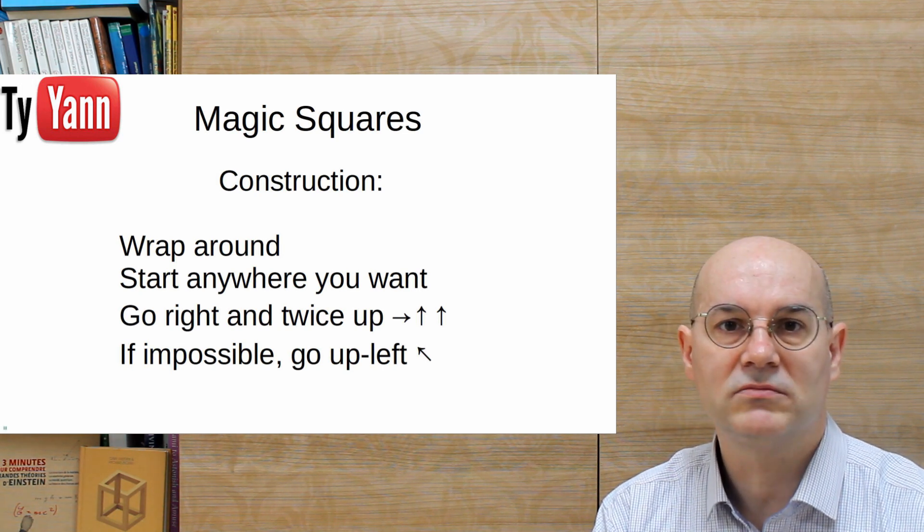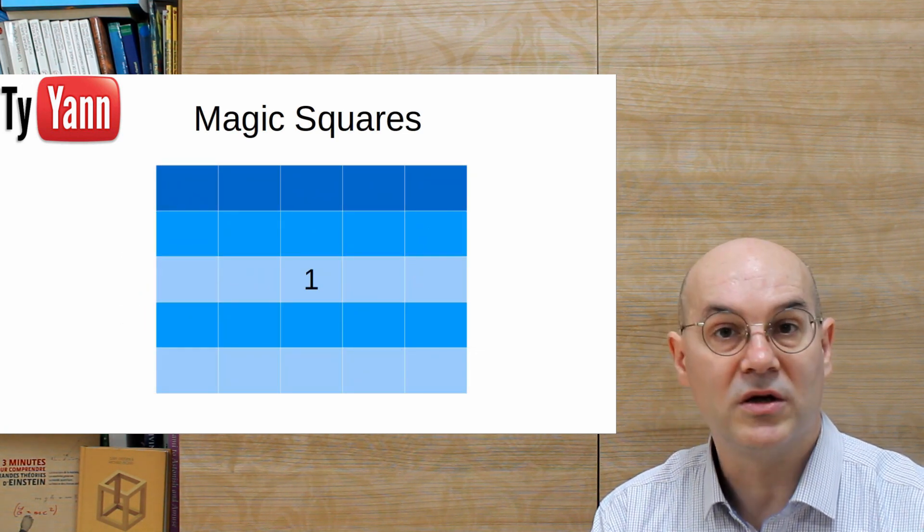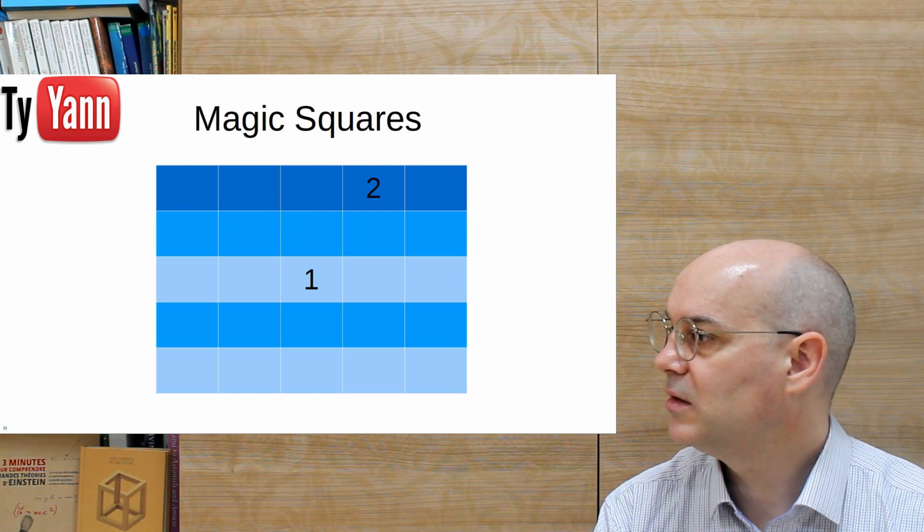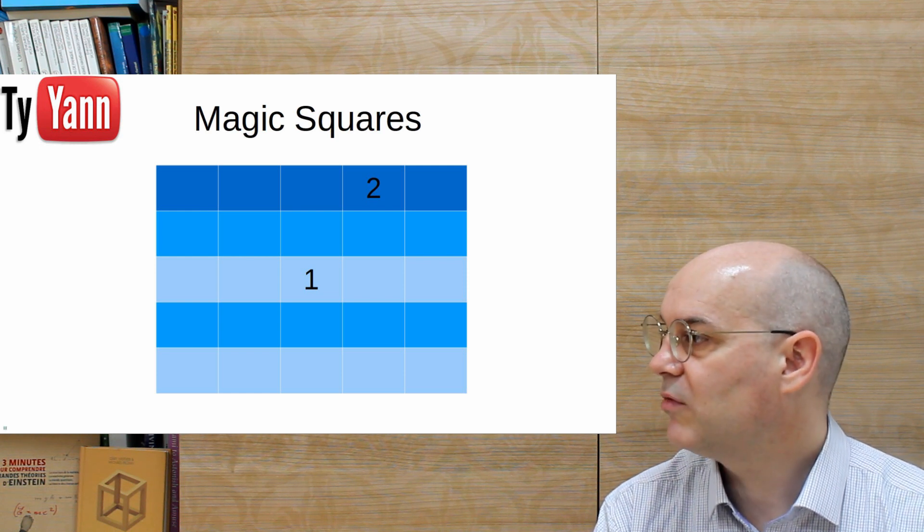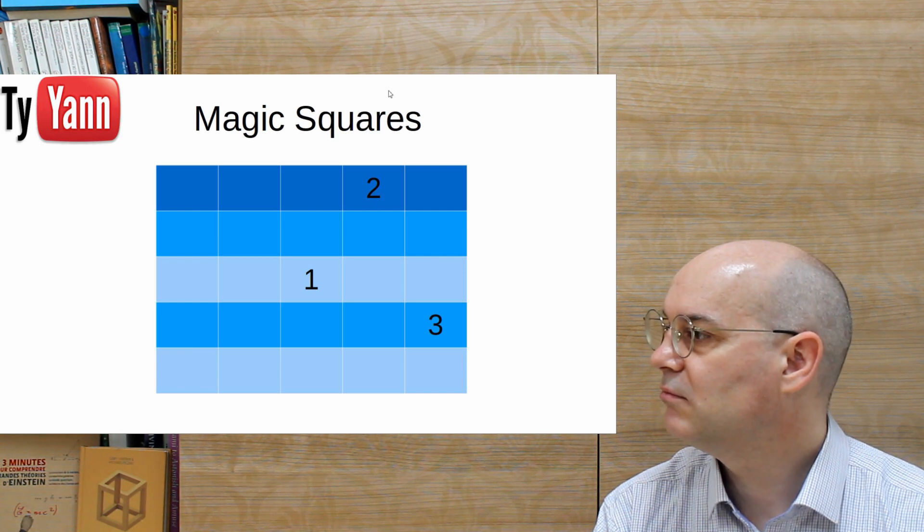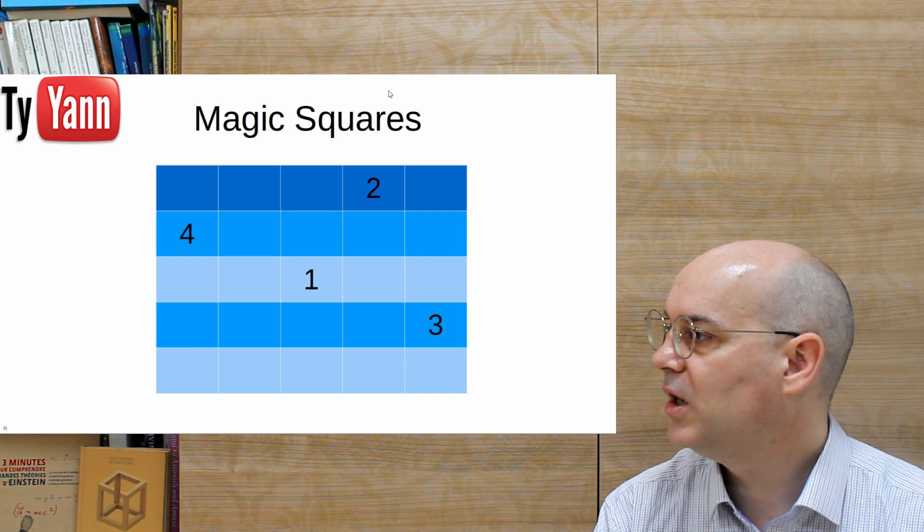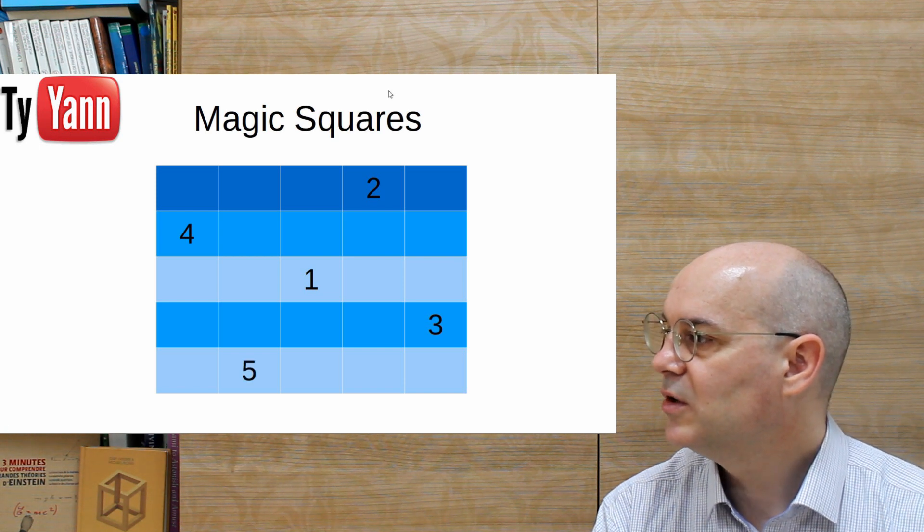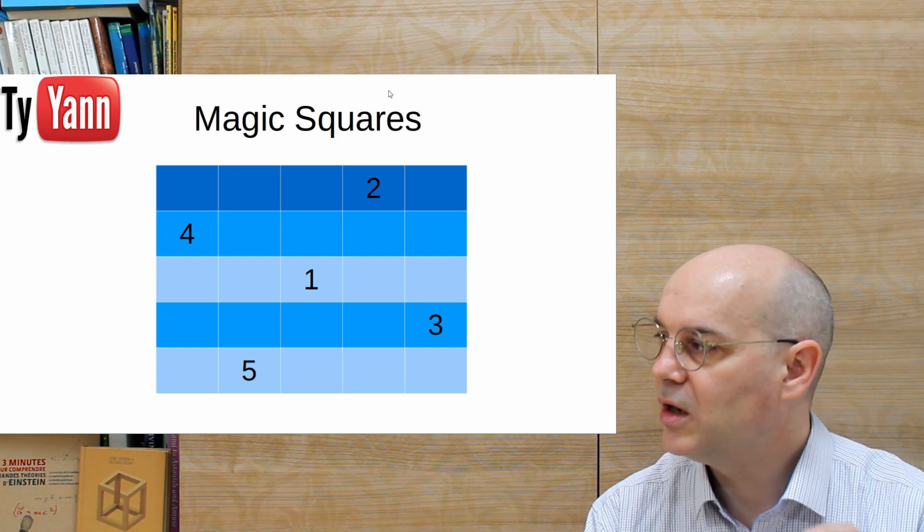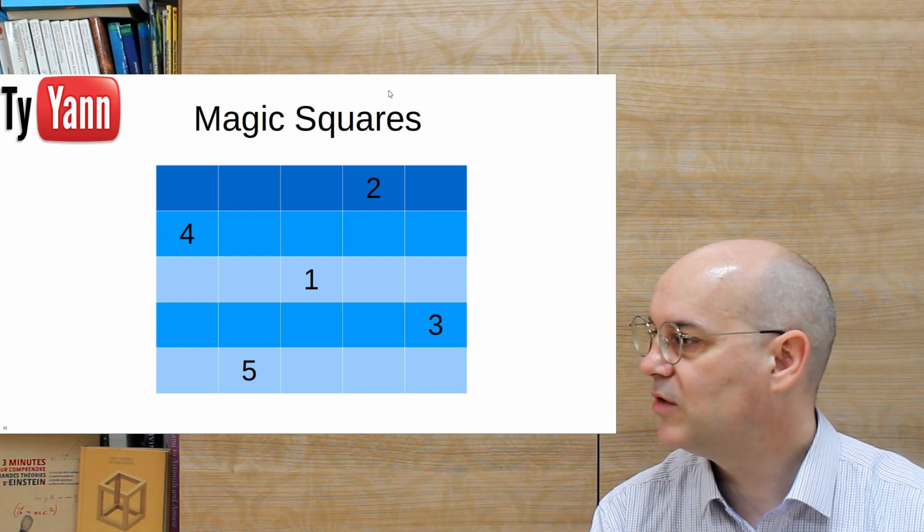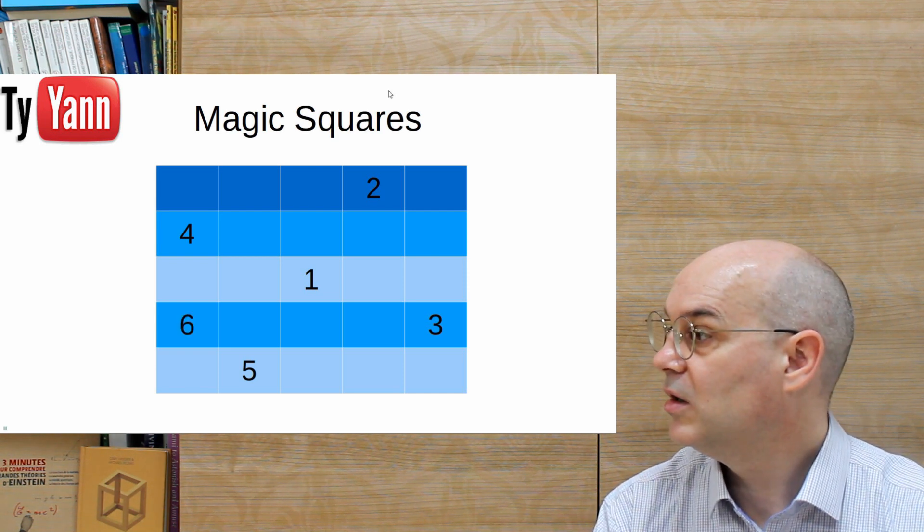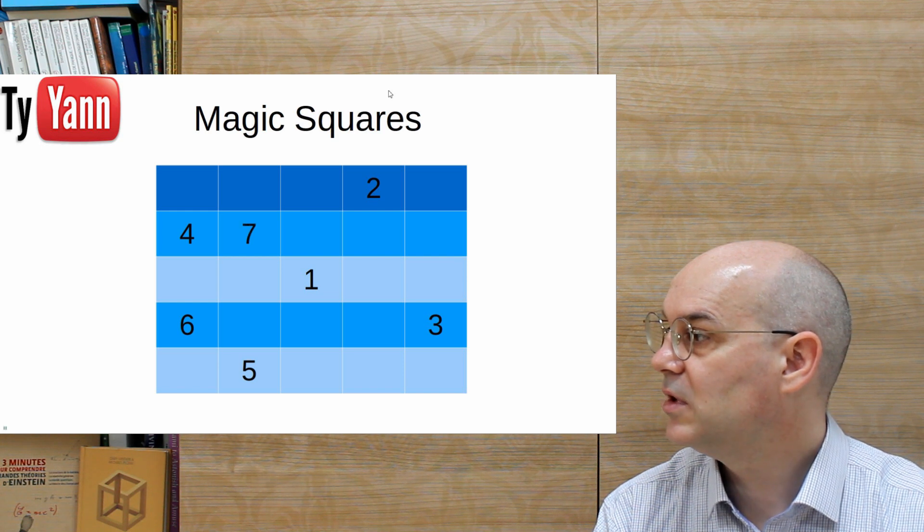Let's do this. So we start anywhere we want. For instance, here we start in the center. Put out 2, like here. 1 on the right, 2 up. The 3 wrapping around, no problem. And we keep going, 4 and 5. And once the 5 is written, we can't write a 6 because there's 1 at its place. So we go up left and we put the 6. And now we can keep going. Right and 2 up. And keep going.